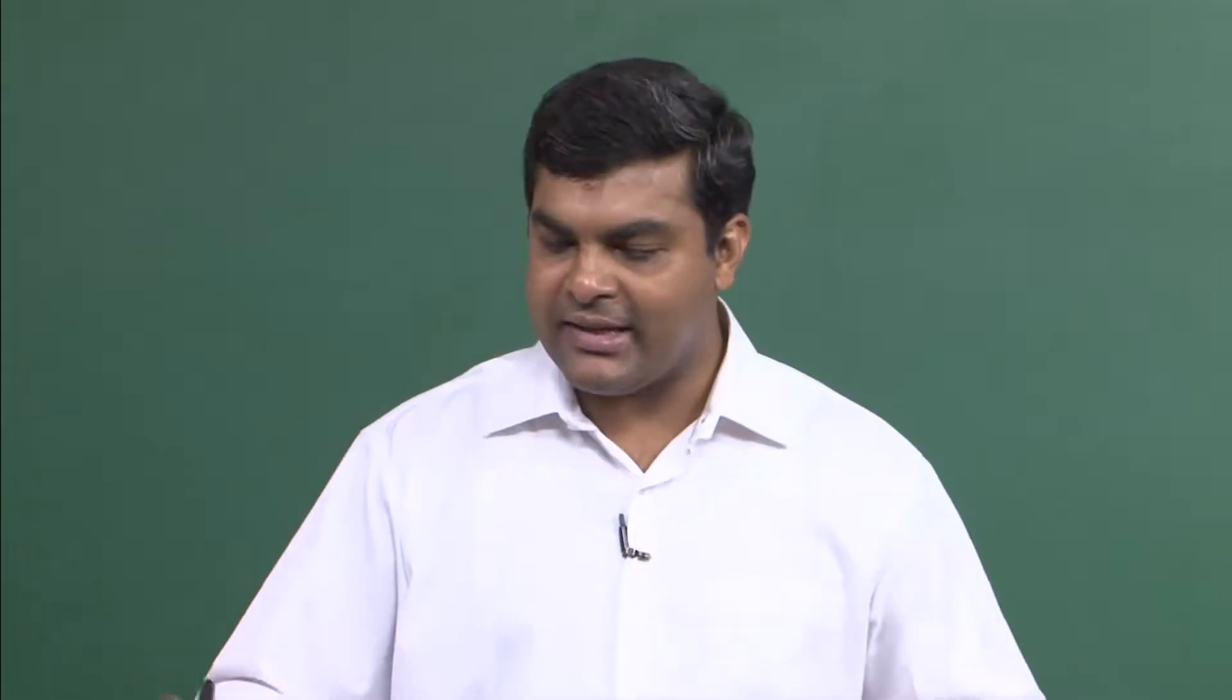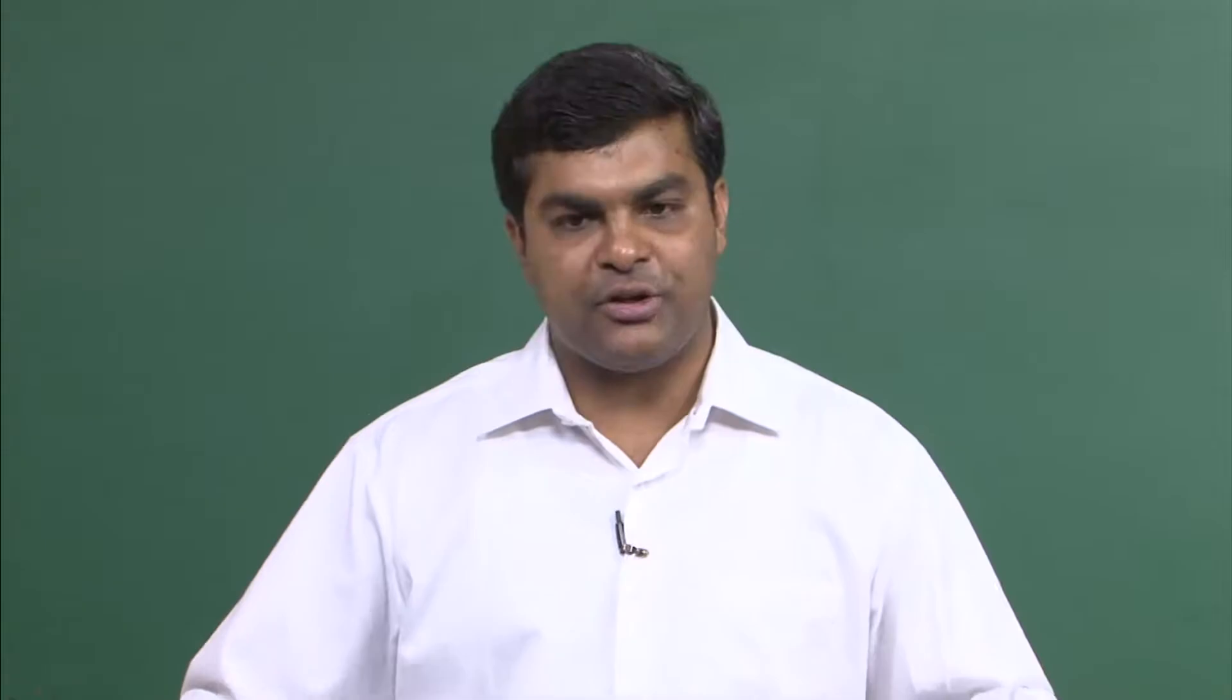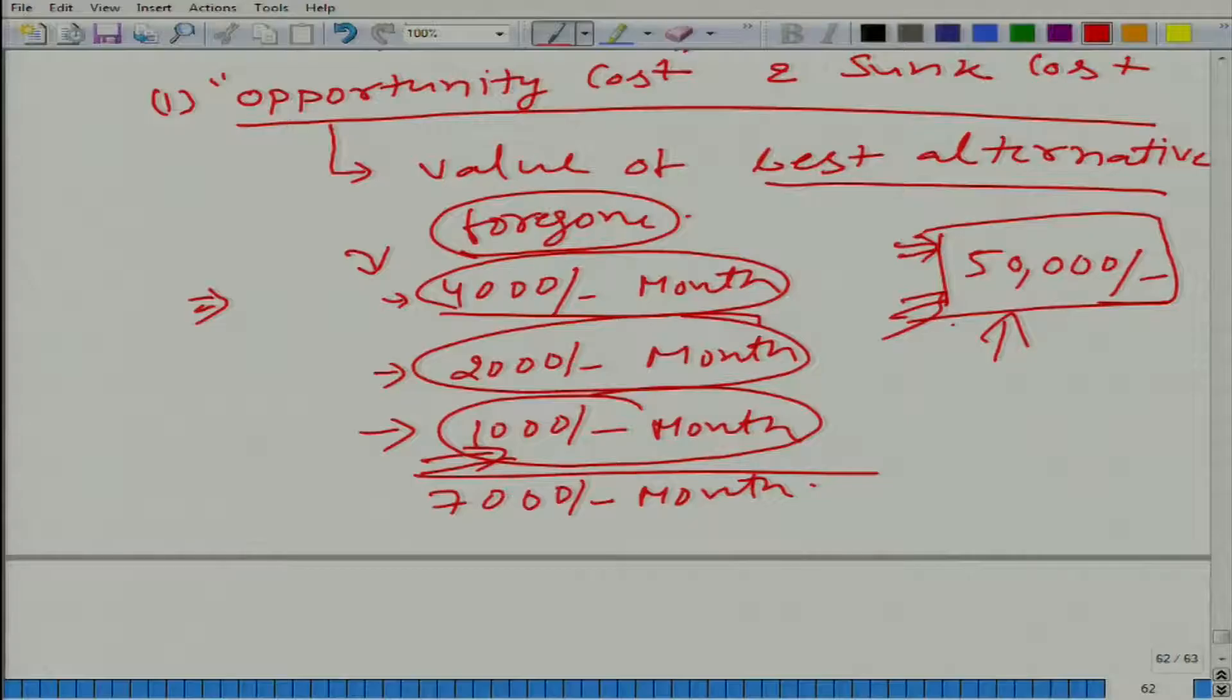So now, because he is studying here, he is not earning this 50,000 rupees. So his cost would be total 7,000 and this 50,000 and this is the opportunity cost that we are not including here in the cost.